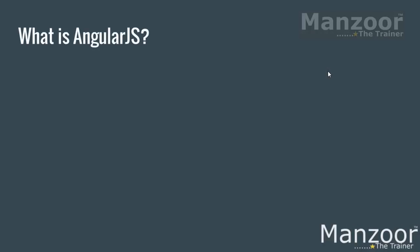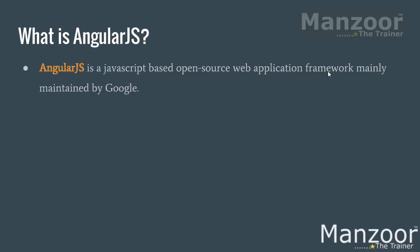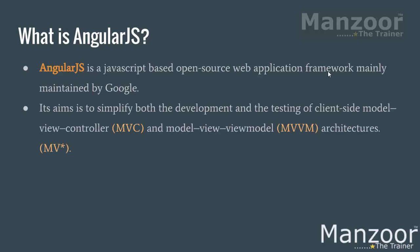What is AngularJS? It is a JavaScript-based open source web application framework mainly maintained by Google. Its aim is to simplify both development and testing of client-side MVC or MVVM. We will discuss client-side MVC versus server-side MVC in a future lecture. It was first released in 2012. That's it for the theory part — let us jump into implementation in our next video. Thank you very much.